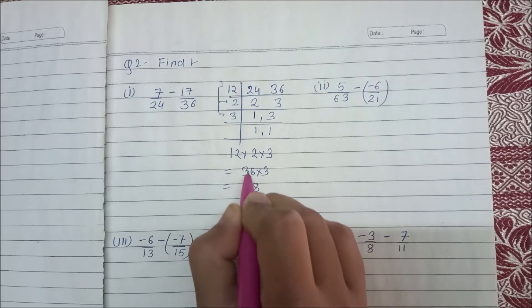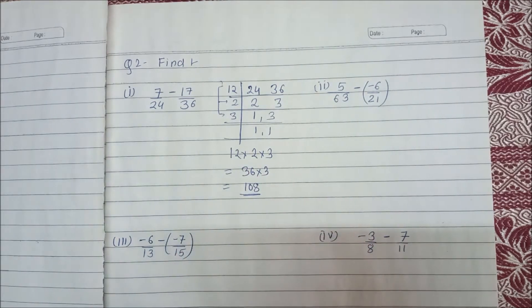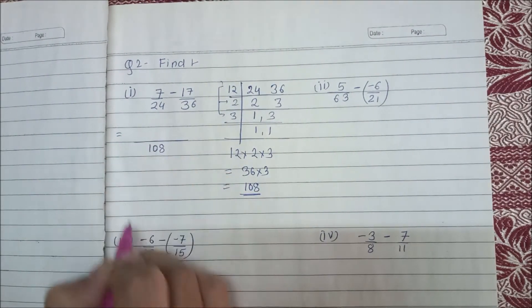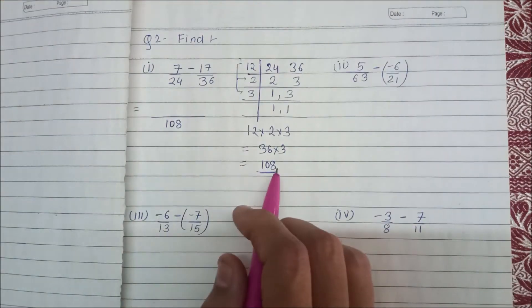So 6 times 3 is 18, now 8 carry 1, 3 times 3 is 9 plus 1 is 10, so 108. This would be our LCM.